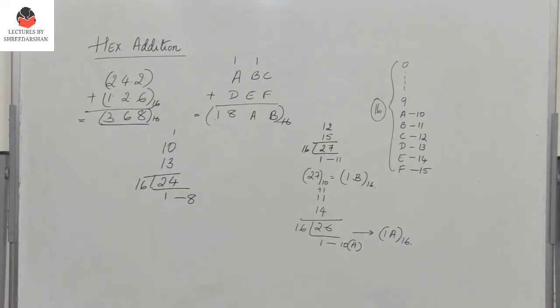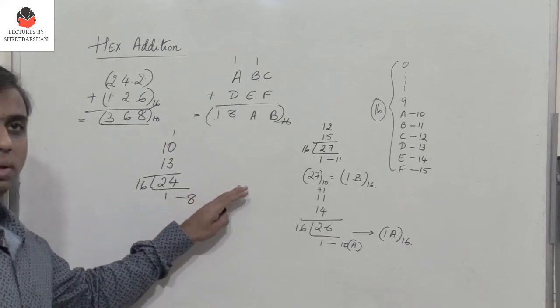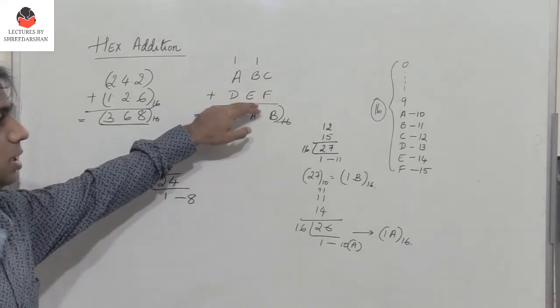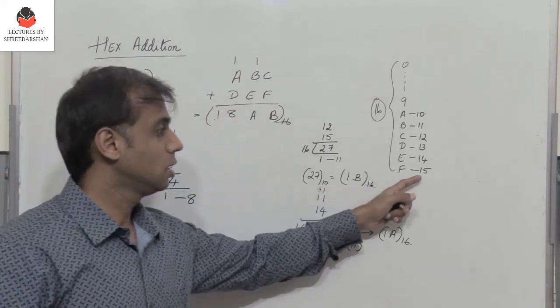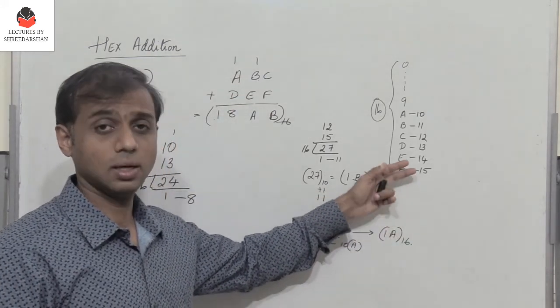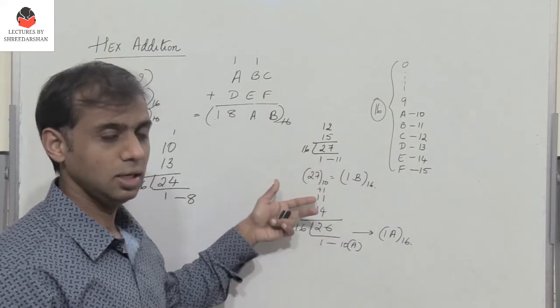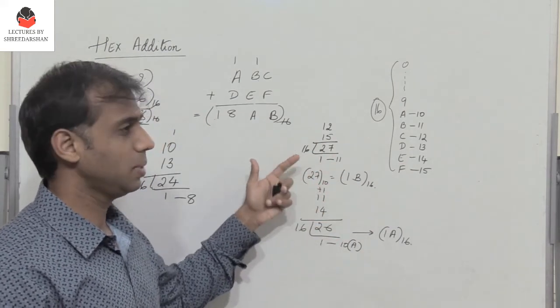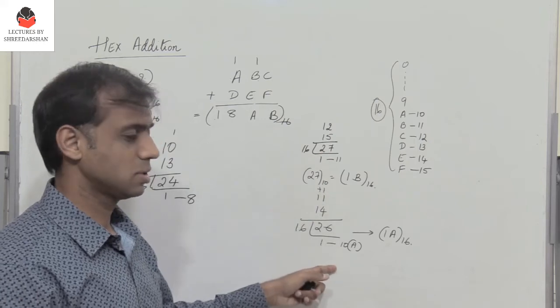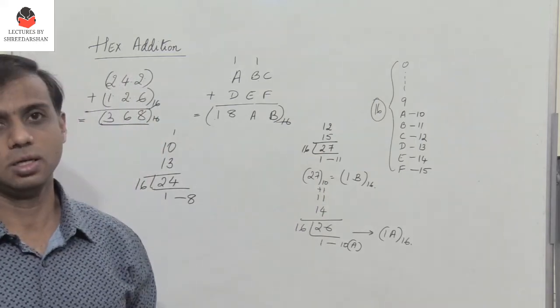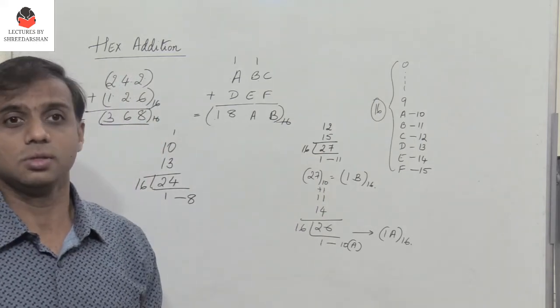This is the final hexadecimal result. When I add ABC with DEF, I get 18AB. The key thing to remember is: when you add two hexadecimal numbers and the sum is greater than 15, you need to get the hex representation by dividing by 16. Then perform addition as usual. This is how simple it is.